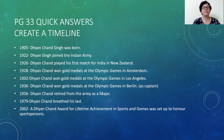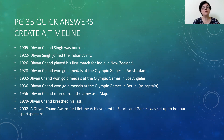In 1922 he joined the Indian Army. In 1926 he played his first match for India in New Zealand. In 1928 he won gold medals at the Olympic Games in Amsterdam. In 1932 he won gold medals at the Olympic Games in Los Angeles. In 1936 Dianjanth won gold medals at the Olympic Games in Berlin, where he served as captain.